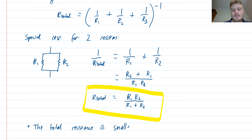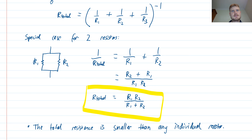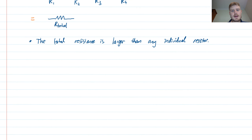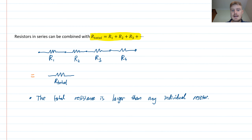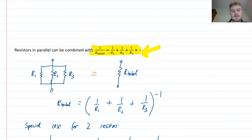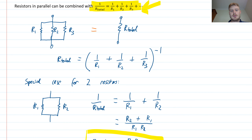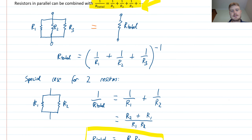Another important point: when combining resistors in parallel, the total resistance is smaller than any individual resistor — so the total resistance goes down. That's the opposite of the series case. Resistors in series, the total gets larger; resistors in parallel, the total gets smaller. That's another useful pattern to know.